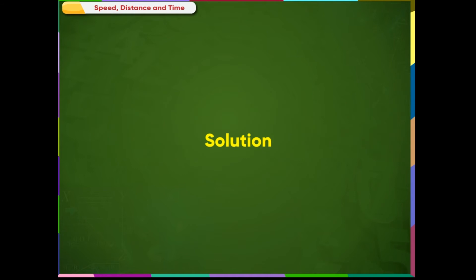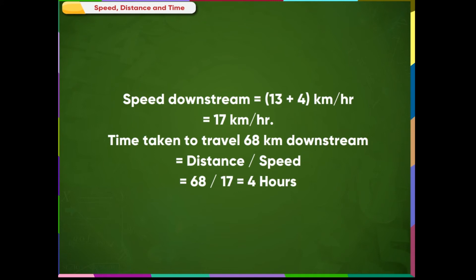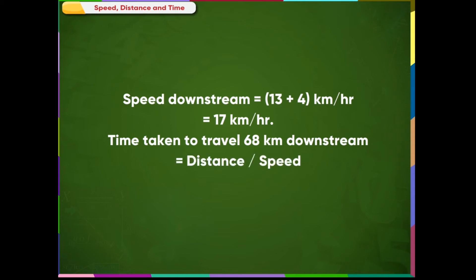Solution: Speed downstream is equal to 13 plus 4 kilometer per hour, which is equal to 17 kilometer per hour. Time taken to travel 68 kilometers downstream is equal to distance divided by speed, which is 68 divided by 17, equal to 4 hours.